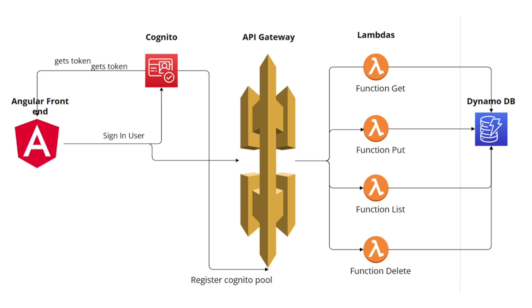We also have an Angular front-end application which will interact with this API Gateway. I'll be showing you the basic application first, and then I'll be integrating the Angular front-end and API Gateway with Cognito. The prerequisite for this course is that I have my DynamoDB and its table created already. The API Gateway setup and Cognito integration I'll be doing on the fly here in the video. This video might be slightly longer, so bear with me.